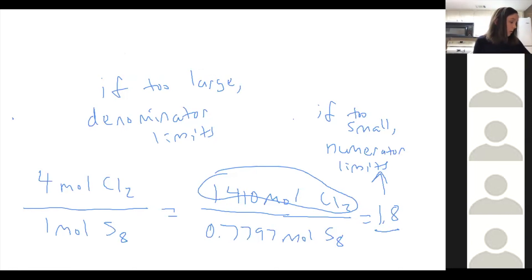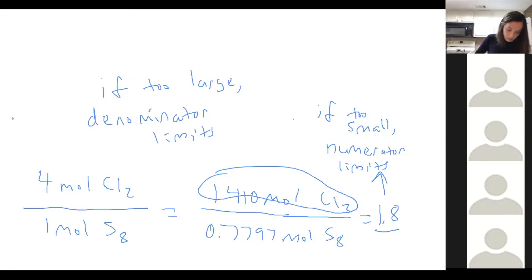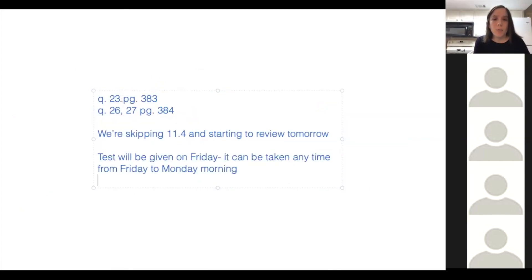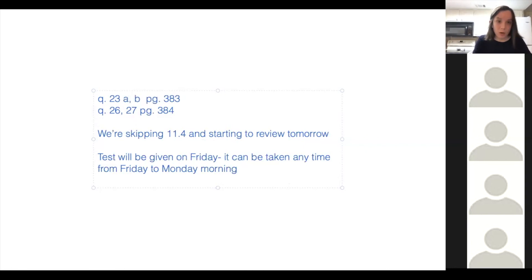For homework, go to page 383 and do question 23 — but just parts A and B for today, since we haven't covered how to do C and D yet; we'll do that tomorrow. Then on the next page, do questions 26 and 27.